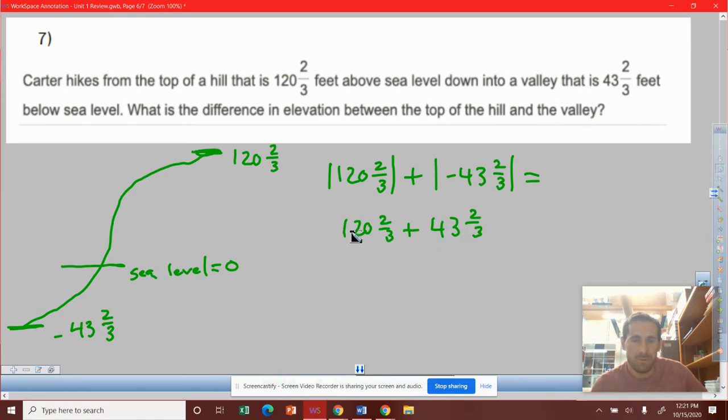I'm going to just add my whole numbers. 120 plus 43 is 163. Two-thirds plus another two-thirds is four-thirds. We won't leave our answer looking like this. We'll have 164 because this four-thirds, I can take it and represent it as one and one-third. So that 163, I'm adding that one to get 164, and then I have one-third left over.